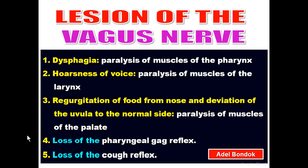The effect of a lesion in the vagus nerve: dysphagia due to paralysis of pharyngeal muscles, hoarseness of voice due to paralysis of laryngeal muscles, deviation of the uvula to the normal side when saying 'A' due to paralysis of palatal muscles, loss of the pharyngeal gag reflex, and loss of the cough reflex.